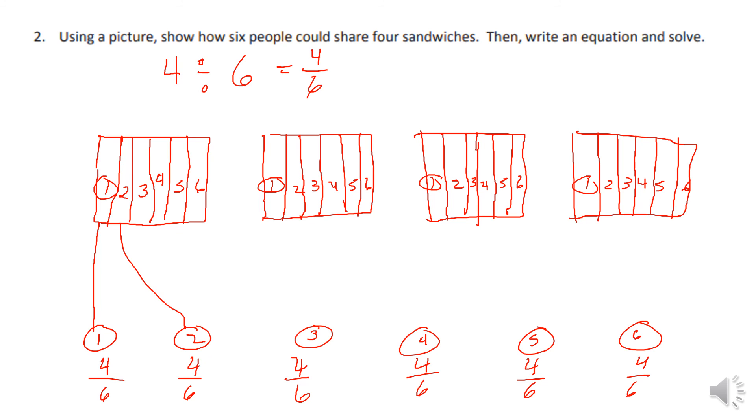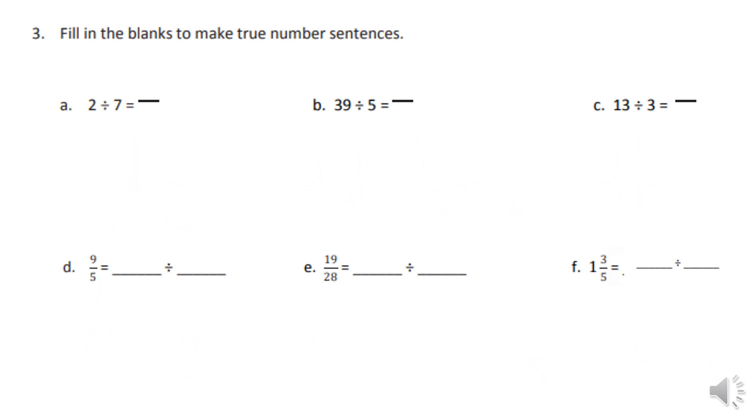Now, to show that works, since we could just add all these back up, we can see we had four sandwiches to start with, and that's four times six. It's going to be 24 sixths, which is equal to four.